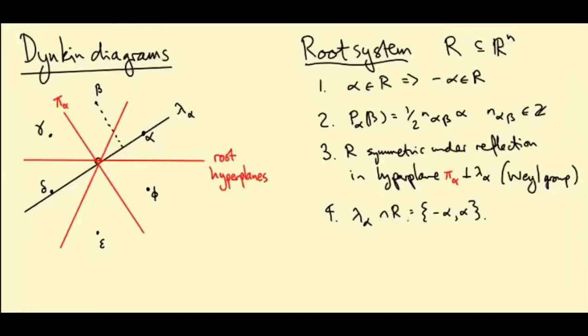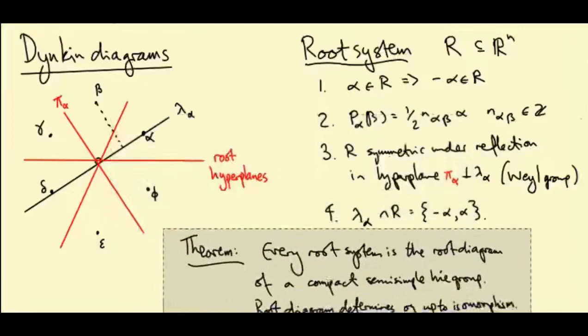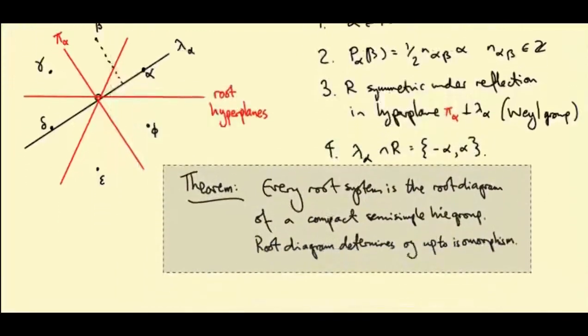It turns out these axioms are very good at encapsulating what it means to be the root diagram of a compact, semi-simple group because there's a theorem which says every root system in this sense is the root diagram of a compact, semi-simple group.